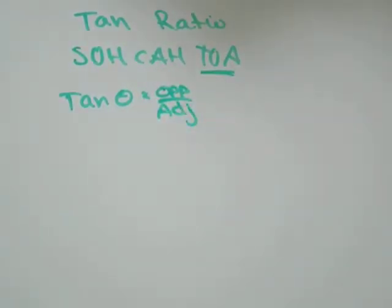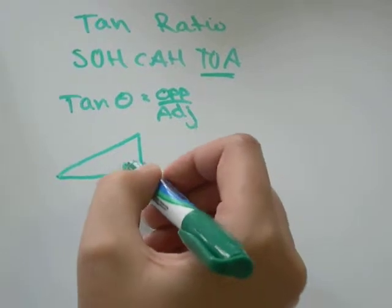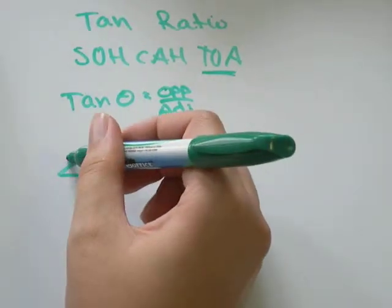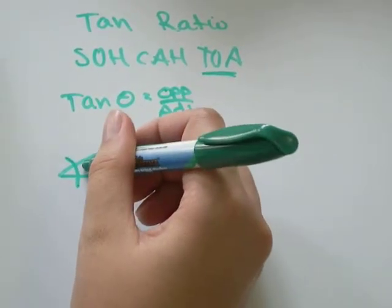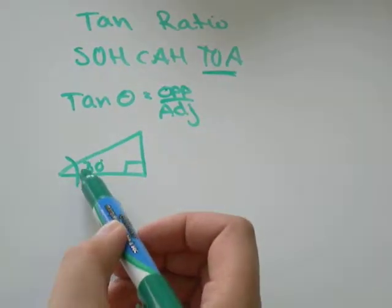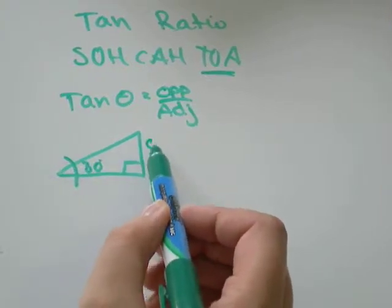Let's do an example and show you how to use the formula. We have a triangle like this. The first thing we need to do is figure out what angle we're talking about. I'll say that this angle is theta and it's equal to 30 degrees. From this angle, the opposite side is the one across from it.